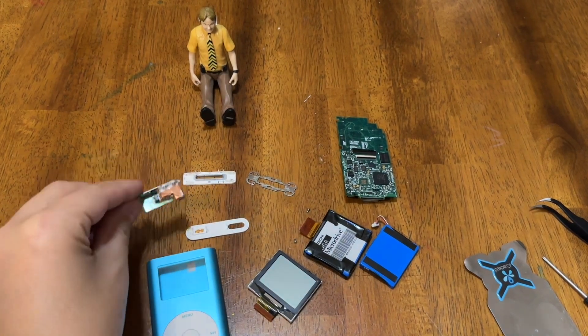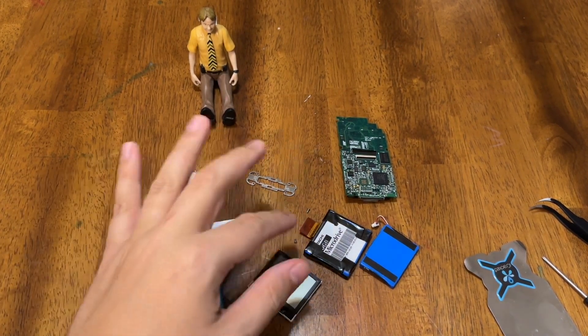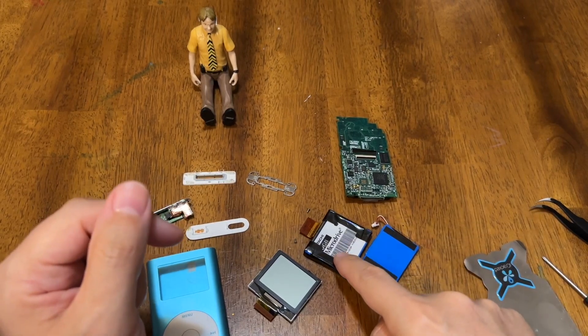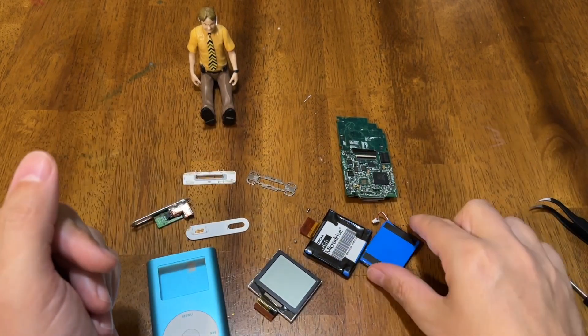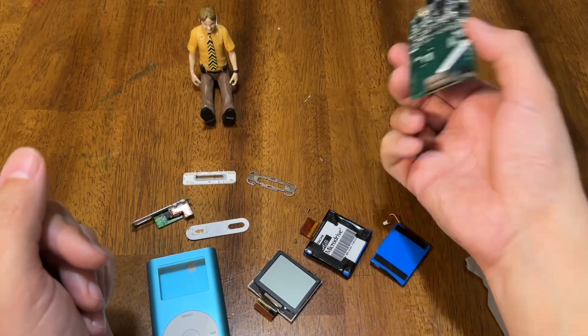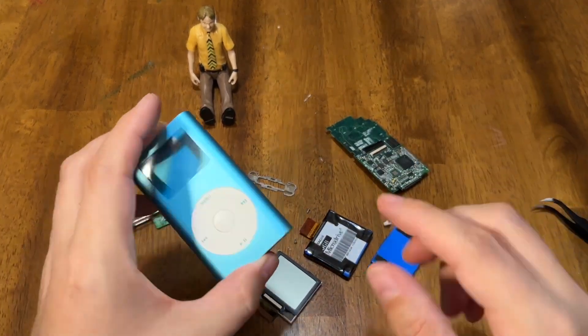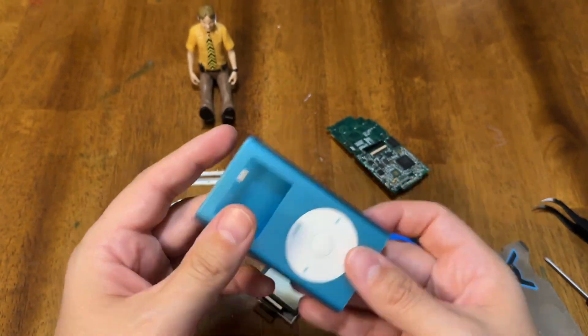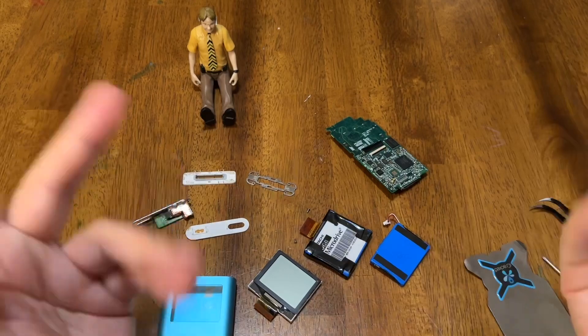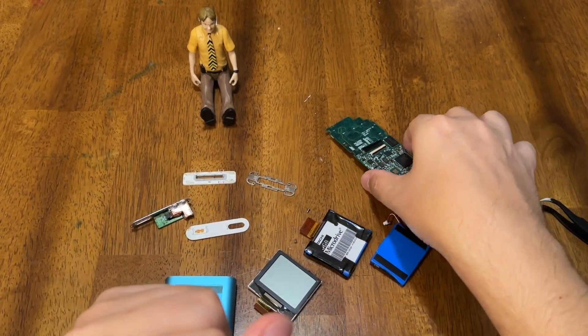And you can replace the headphone jack. You can replace the micro drive with a solid state drive. You can replace the battery. You can replace the whole motherboard if you want to. You can replace the housing. You can replace the click wheel like I showed you. You can replace everything and putting it back together as easy as can be.